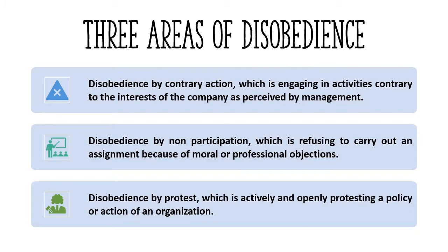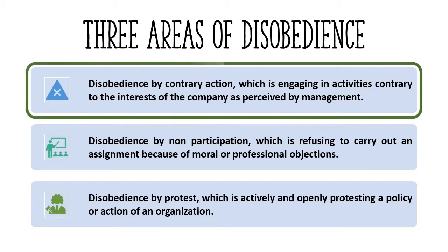We can identify three modes or forms of disobedience. The first form is disobedience by contrary action. In this form, people try to reduce the damage done by their companies or governments through doing the opposite of what the companies and governments are doing.